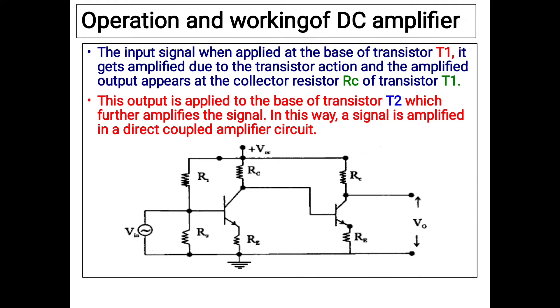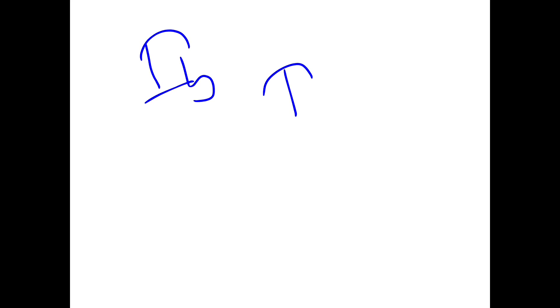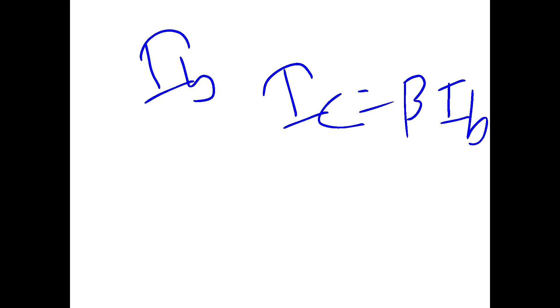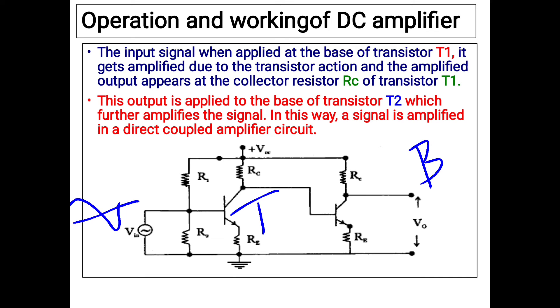As we apply the input signal through the base terminal of the first transistor T1, it will be amplified by beta times, where beta is the amplification factor. If we give input signal Ib to the base terminal, we will obtain output Ic equals beta times Ib at the collector terminal. So the input signal will be amplified by beta times at the collector terminal of the first transistor.